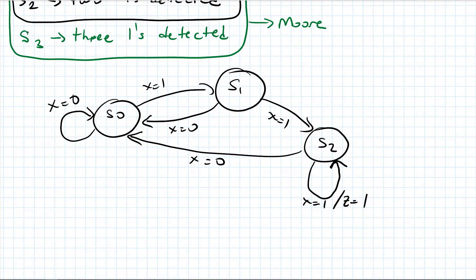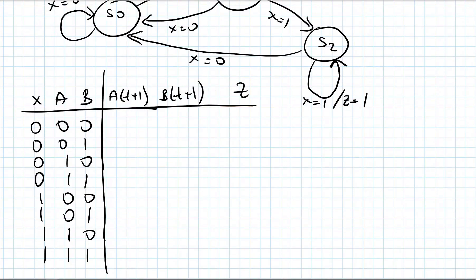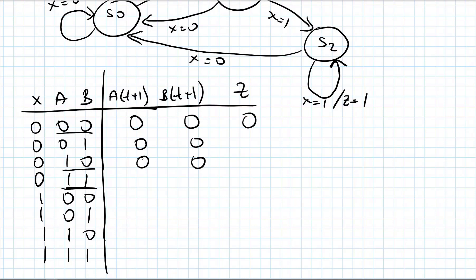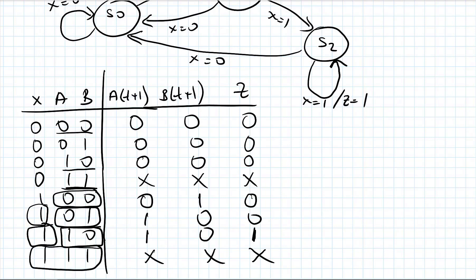Let's write our state table. I have my X input. I represent my states with A and B — so I have A(t+1), B(t+1), and output Z. If I am in state 00 and X is 0, I stay in 00 and output is 0. If X is 1, I go to S1 state and output is 0. In S1 state, if a single one is detected and another one is coming, I go to S2. If I am in S2 and input is 1, I stay in S2 and output is 1. The invalid state conditions are marked as don't-care (X).